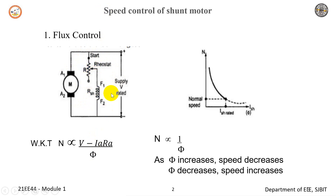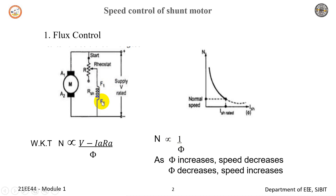When you vary the shunt current ISH, the flux varies in the field. As n is inversely proportional to phi, by decreasing the flux the speed can be increased and vice versa. The flux of the DC motor can be changed by changing ISH with the help of a shunt field rheostat. Since ISH is relatively small, the shunt field rheostat has to carry only a small current, which means I-squared-R losses are small, so the rheostat is small in size.